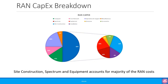If we look at the RAN CapEx breakdown, we see that spectrum contributes 10% of the total CapEx in the network. RAN equipment is 10%, antennas are 2.5%, other accessories are 5%, site construction is 15%, and installation is 7.5%. As you can see, site construction, spectrum and equipment account for the majority of the RAN costs.